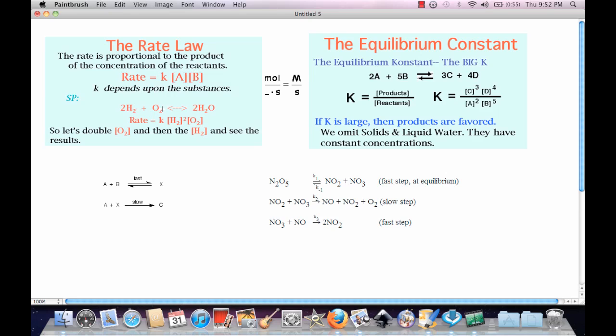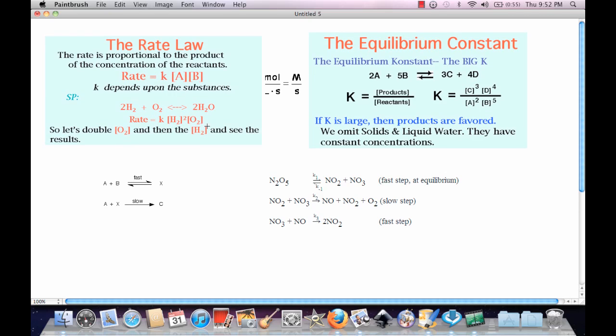Say there's 2H plus O2 gas, it makes 2H2O, right? So what we do is we reorganize that formula to form the reactants—sorry, the products divided by the reactants.